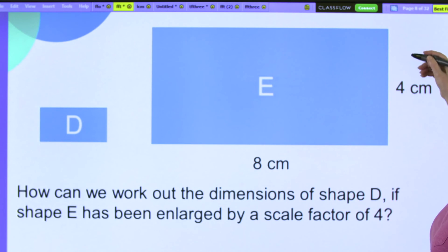I'm looking at the short side first. Four centimetres divided by four will give me one centimetre and eight centimetres divided by four is going to give me two centimetres.